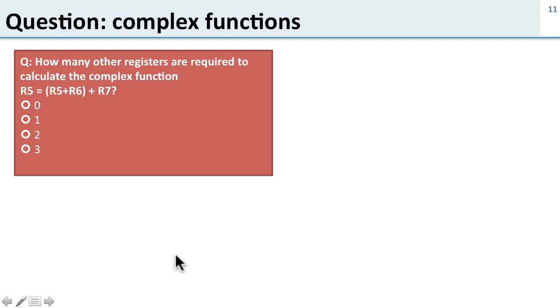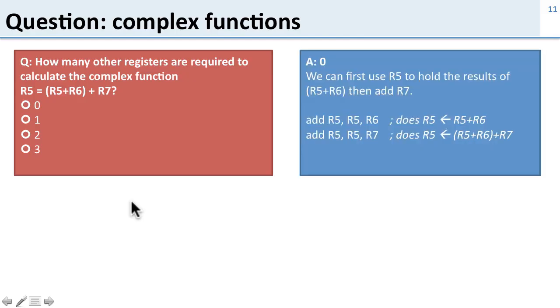Here's a question about a complex function. So how many extra or other or temporary registers do I need to calculate this complex function? I want to store into R5, R5 plus R6 plus R7. Well the answer here is we don't need any. And we can get away with this because we can use R5 to hold the temporary results. So the first operation we do R5 plus R6 and put this into R5. Then we can add R7 to that and put it back into R5. So we're accumulating or building up the result in R5 so we don't need any temporary registers.